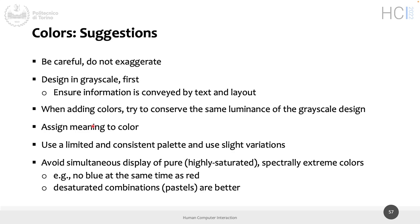First, design in grayscale. The main information should be conveyed by text, layout, and alignment — not by color. Color is there to highlight, but all information should already be visible and well-organized without it. When you add color, try to respect the same pattern you established in grayscale. If something was black in grayscale, use a strong color; if it was close to white, use a less powerful color.